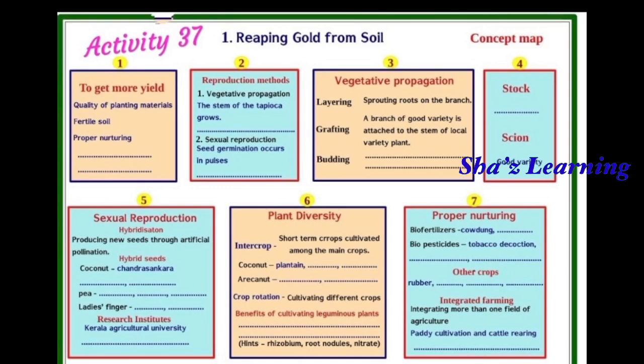Then, sexual reproduction — seed germination occurs. For example, in pulses, the stem will grow. Seed germination occurs in pumpkin and in amaranthes. Those are examples of sexual reproduction.